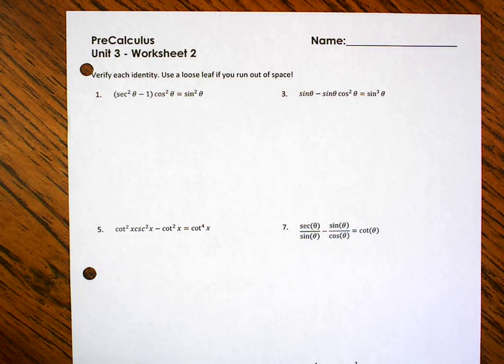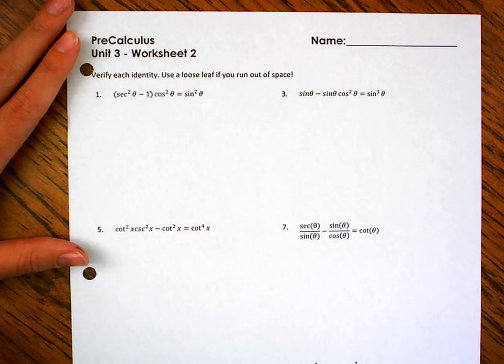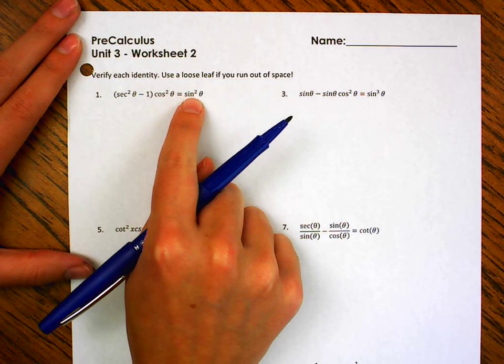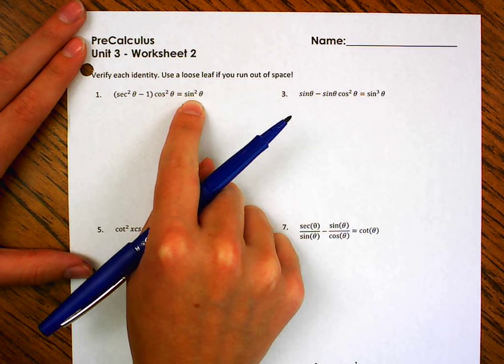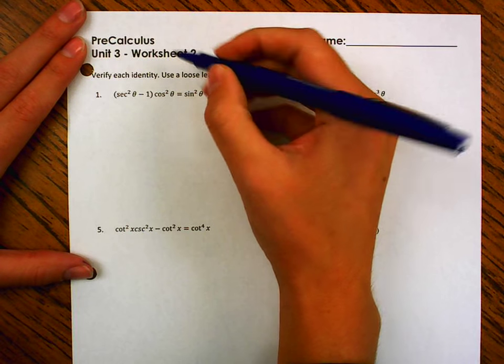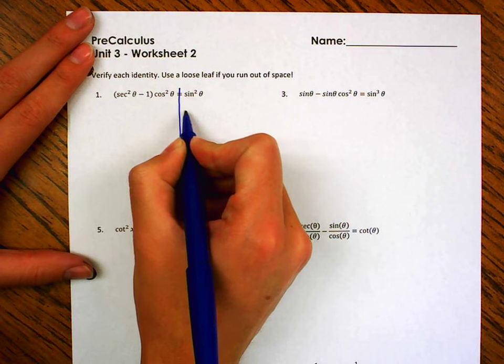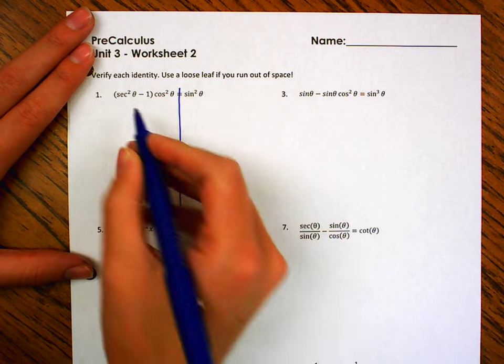So, remember, when we're verifying identities, our goal is to get one side to match the other. And often there's one side that's a lot more simplified already than the other. Like when I look at this, this is much more simplified. So, I'm going to work with the more complicated side, which is this side. I'm going to give myself some room. I'm just going to draw a line. We're always going to have an equals, and then the sine squared theta is never going to change over here.